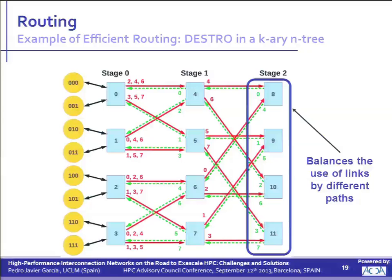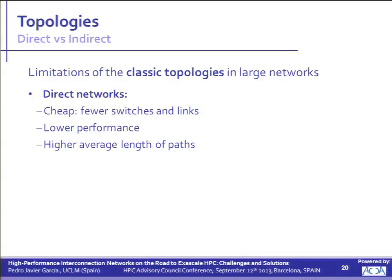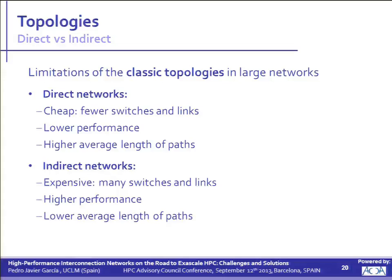It is a very interesting trend to couple the routing algorithm to specific topologies in order to get the simplest possible routing while providing suitable performance. Both direct and indirect classical topologies have some limitations. In general, direct networks require fewer switches but it is not easy to achieve good performance. In contrast, indirect networks are more expensive, requiring many more switches and links, but it is easier to get higher performance. In general, direct networks have a high network diameter, while indirect networks have a lower network diameter.